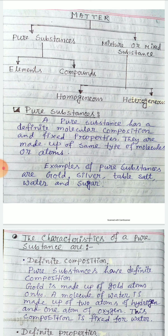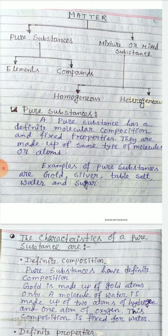A pure substance has a definite molecular composition and fixed properties. Pure substances are made up of the same type of molecules or atoms. Examples of pure substances are gold, silver, table salt, water, and sugar.